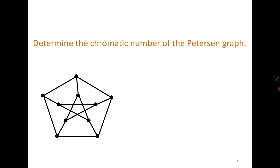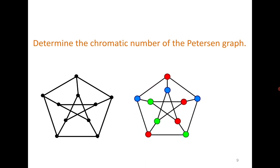For the well-known Petersen graph, try to find the chromatic number. It comes out to be 3, as visible here. The coloring may not be unique — there can be different ways to color it — but the chromatic number is fixed.